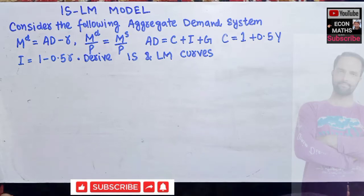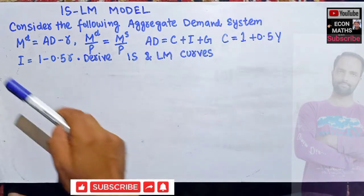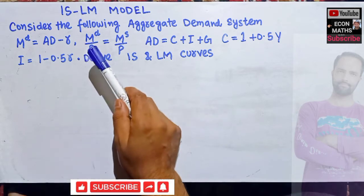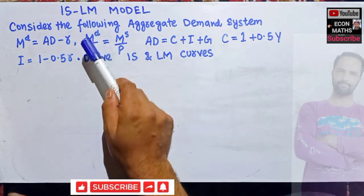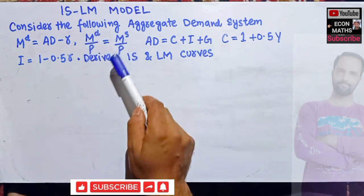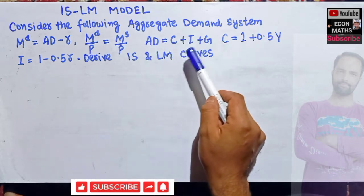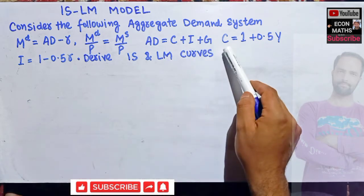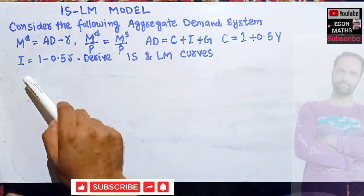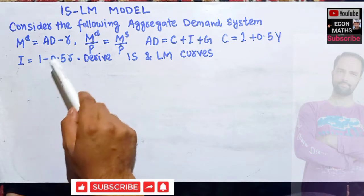In this video we will solve a numerical problem on the IS-LM model. The question states: money demand is equal to aggregate demand minus rate of interest. Real demand for money (M^d / P) equals real money supply (M^s / P). Aggregate demand is composed of consumption, investment, and government expenditure. Consumption C = 1 + 0.5Y, and investment is a negative function of rate of interest: I = 1 − 0.5r.